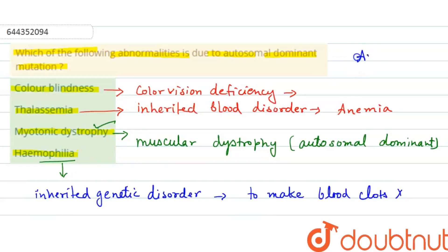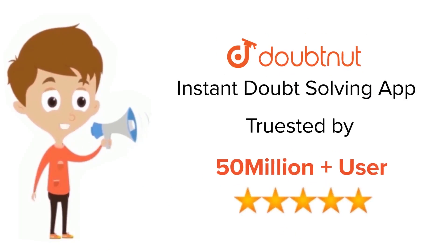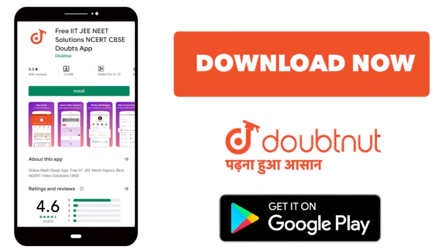So the right answer out of these four options — the abnormality that is autosomal dominant — is option C, myotonic dystrophy. I hope this answers your question. For class 6 to 12, IIT JEE, and NEET level, trusted by more than 5 crore students, download DoubtNet today.